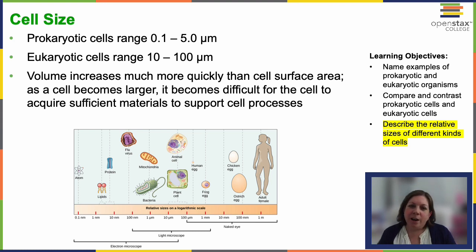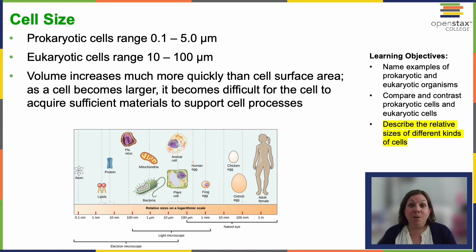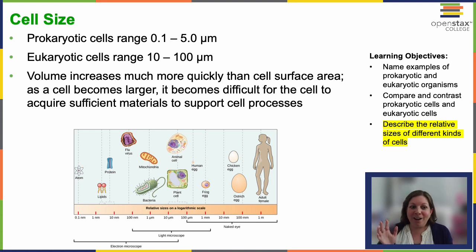We don't consider viruses true cells because they lack a complete cell membrane and such, but they're even smaller. Eukaryotic cells can be quite large — nerve cells can be over 100 micrometers in length. And when you're looking at a microscope, that's actually really big — you have to zoom way out to see the whole thing in one image.